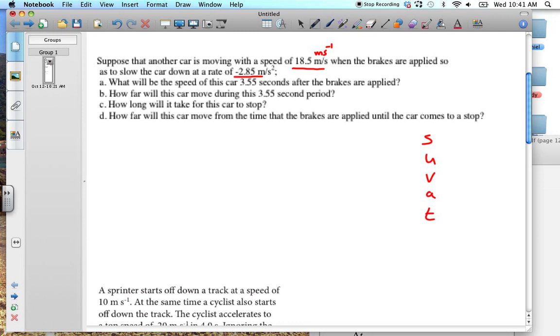We usually write down our SUVAT. The S we don't know yet, but we do know the U, that's the starting. That's 18.5 meters per second. We don't know what our final velocity is, depending on how long the brakes were applied, but we do know its acceleration is minus 2.85 meters per second squared.